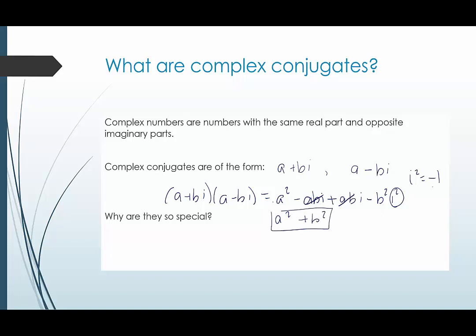So what's so special about this? A is a real number and b is a real number. So when you multiply two numbers that are complex conjugates of each other, you end up getting a real number. They're special because their product is a real number.